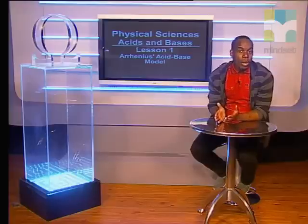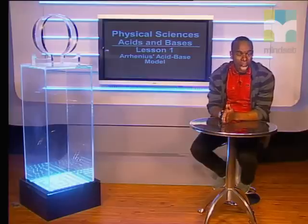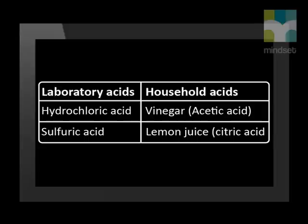Let's take a look at examples of acids and bases found in laboratories and households. Hydrochloric acid and sulfuric acid are examples of acids found in the laboratory, whereas acetic acid, also known as vinegar, and citric acid commonly found in citrus fruits such as lemon juice are examples of household acids.